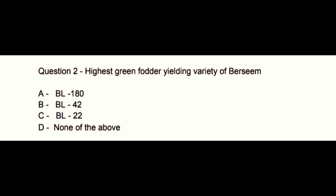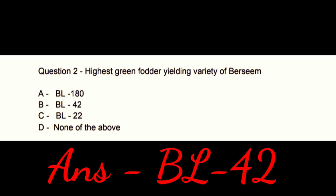Question number 2. Highest green fodder yielding variety of bursine is: Option A: BL180. Option B: BL42. Option C: BL22. Option D: none of the above. The correct answer is option B, which is BL42.